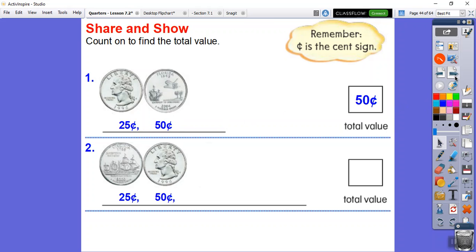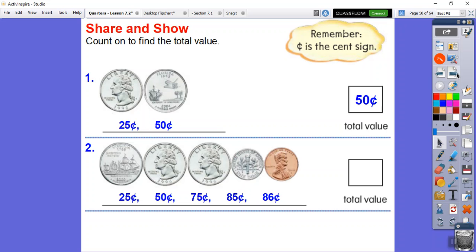Remember there's one dime. So we'll add 10 to 75 to get 85. And then let's add that penny. That's going to get us 86. So our total value is 86 cents.